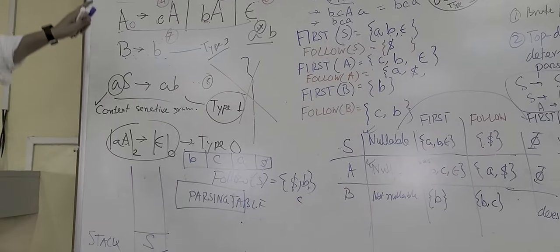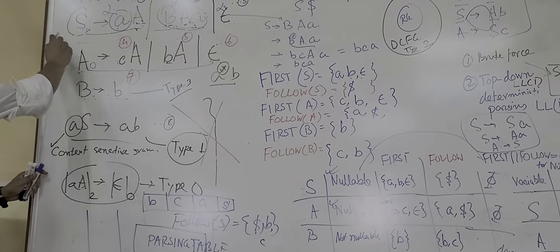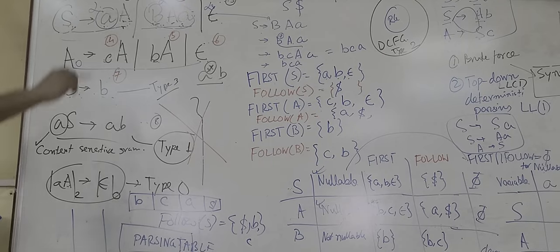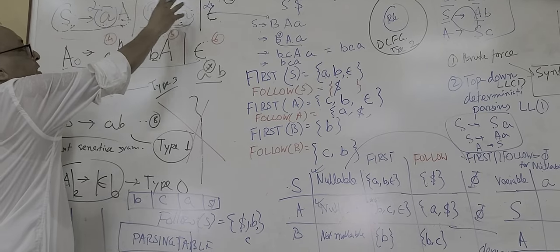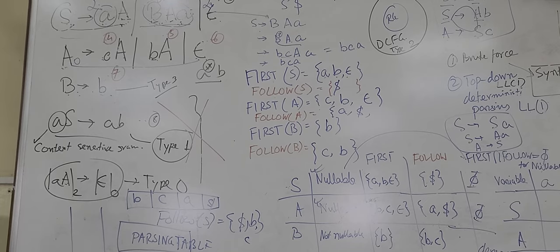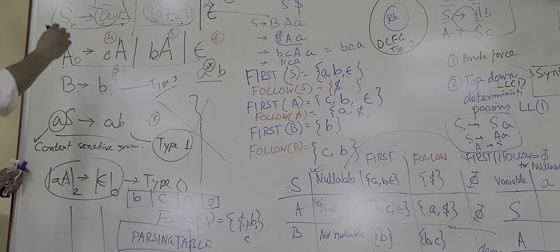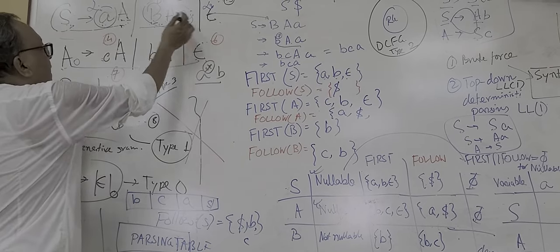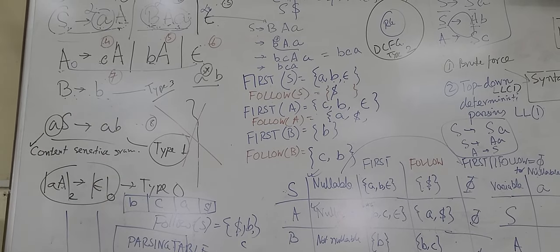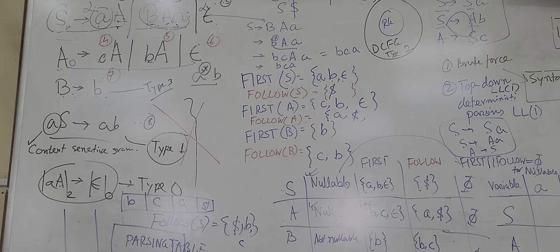Any rule, we have to check for First of all these - intersection of all these rules, First of these, First of these should be phi, intersection should be phi, there is no common terminal. And any variable goes to epsilon, First and Follow of that variable should be phi. Very tough.